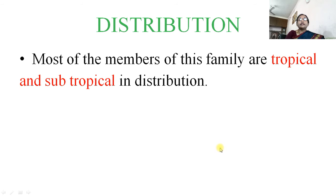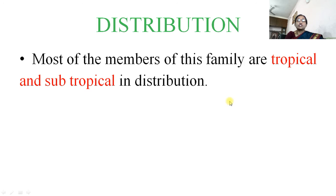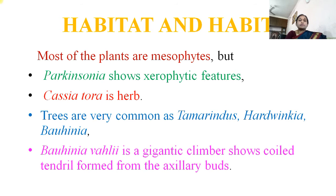Distribution: most of the members of this family are tropical and subtropical in distribution. Habitat and habit: most of the plants are mesophytes, but Parkinsonia shows xerophytic features.